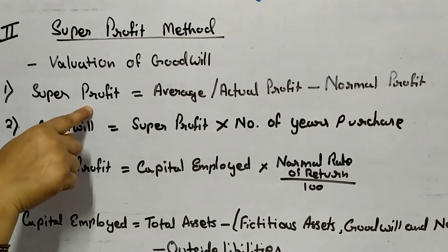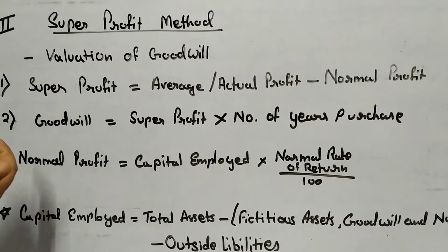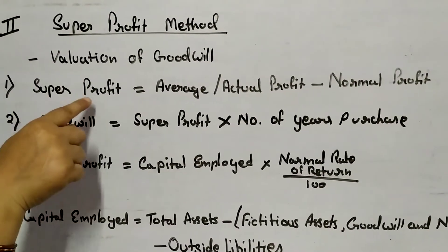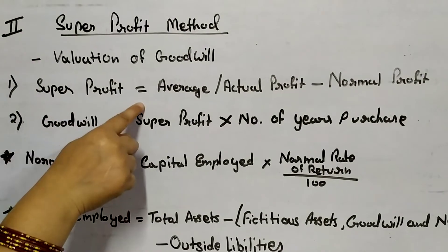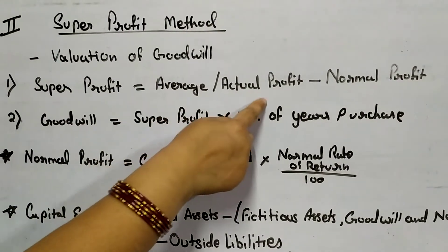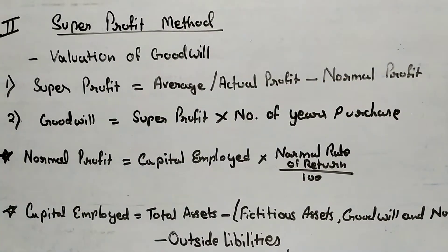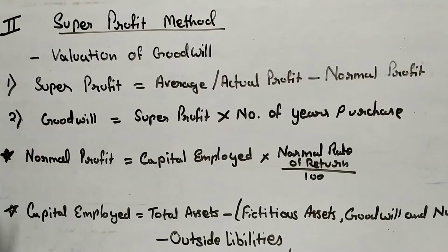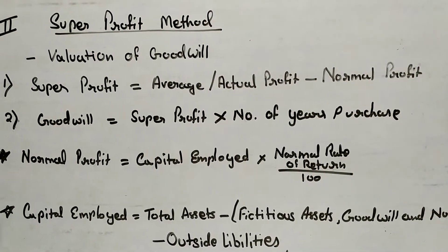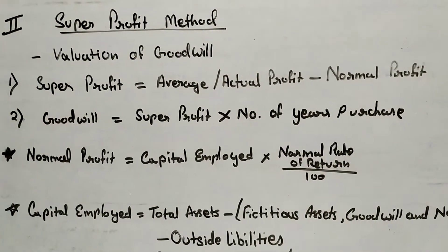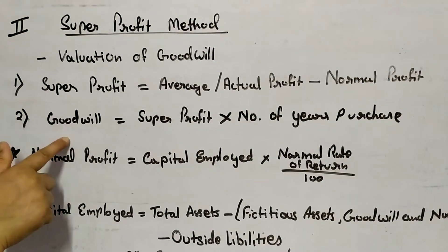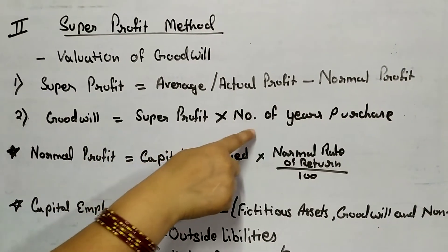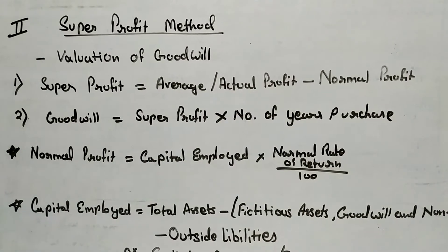It's clear that the firm earned more than normal profit. Super Profit is equal to average or actual profit minus normal profit. In the second step, we evaluate goodwill on the basis of Super Profit — that is, Goodwill equals Super Profit multiplied by number of years purchased.